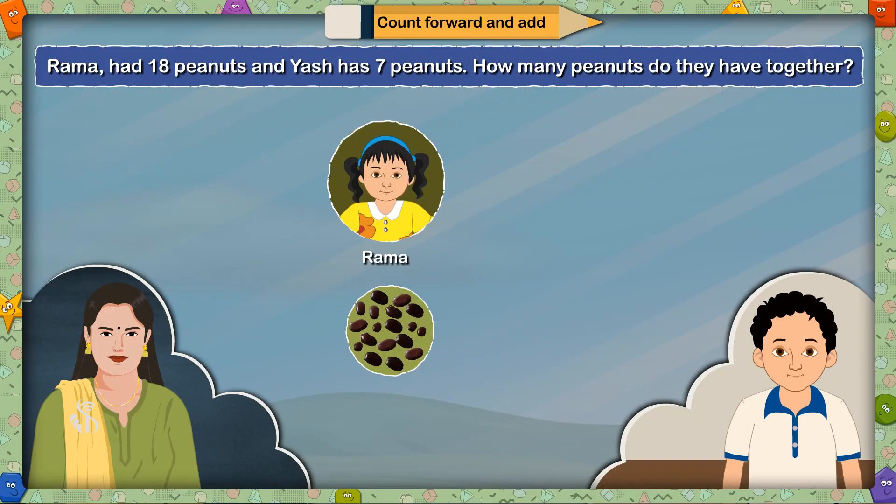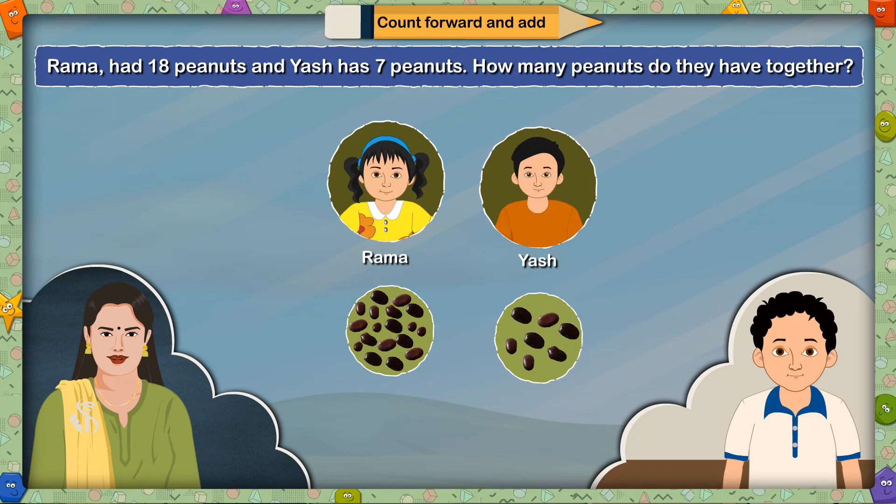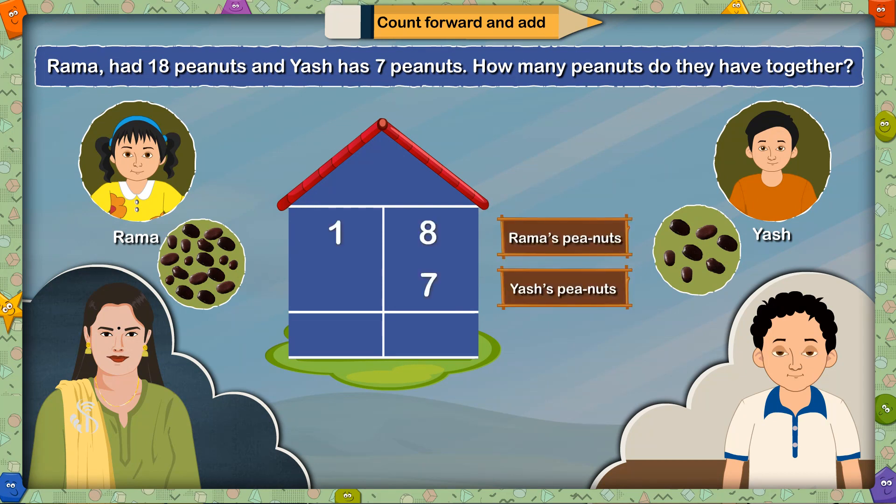Count forward and add. Rama had 18 peanuts and Yash had 7 peanuts. How many peanuts do they have together? What is given here? Rama's peanuts and Yash's peanuts. What is asked? Total peanuts with them. What is to be done?